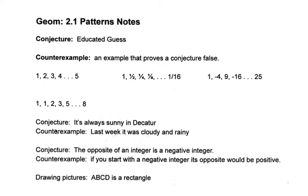Now we're looking at a conjecture: 'It's always sunny in Decatur.' Well, it seems like it, especially in the summer. But you could give a counterexample — last week it was cloudy or rainy, and it was really storming on Monday. Therefore, our conjecture is false; we found a counterexample. Another conjecture: 'The opposite of an integer is a negative integer.' That's not always true, because if you start with a negative integer, its opposite would be a positive. So that would be our counterexample.